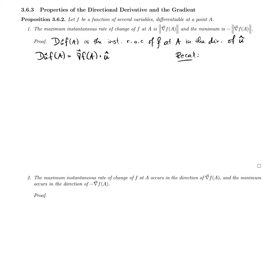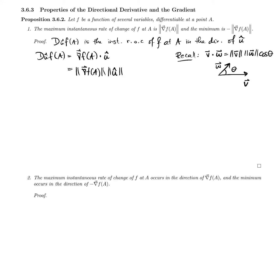We need to remember from our vector geometry that the dot product of two vectors v and w can be calculated as the norm of v times the norm of w times cos θ, where θ is the angle between those two vectors. This means that the directional derivative can be calculated as the norm of the gradient times the norm of u-hat times cos θ. Since u-hat is a unit vector, this simplifies to the norm of the gradient times cos θ.